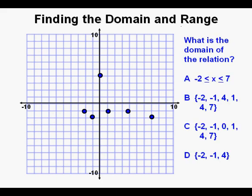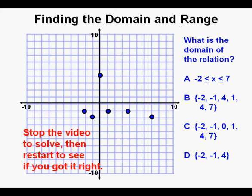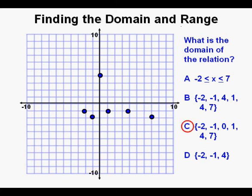Solve this multiple choice problem: what is the domain of the relation? Stop the video to solve, then start to see if you got it right. The correct answer is C: negative 2, negative 1, 0, 1, 4, and 7. All the other answers have at least one thing wrong with them.